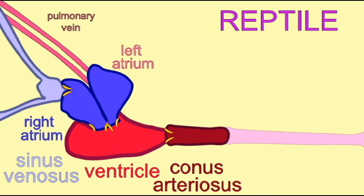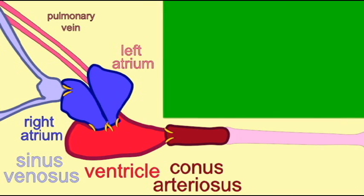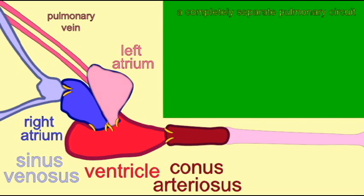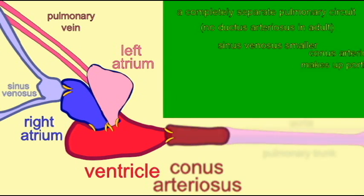The sinus venosus is smaller. The conus arteriosus is present in the embryo, but then becomes part of the two great vessels, a pulmonary trunk and at least one systemic aorta, which leave the heart.